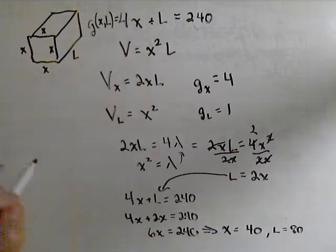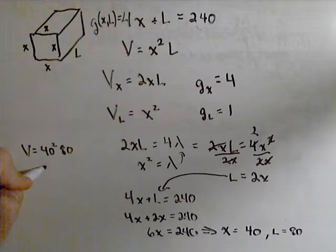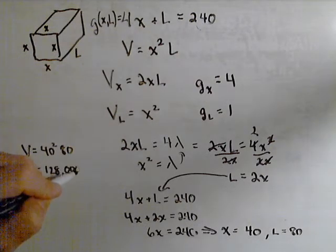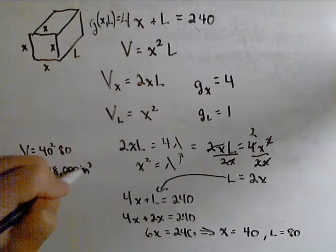And then the volume of such a box is going to be 40 squared times 80 which is equal to 128,000 cubic inches.